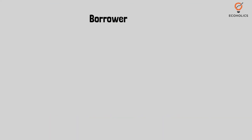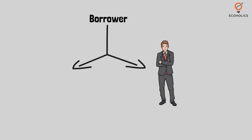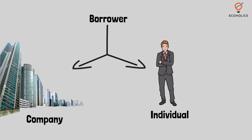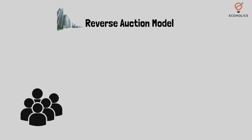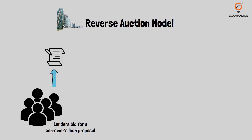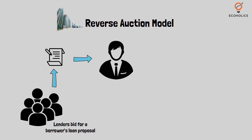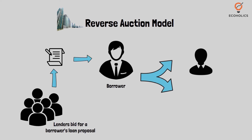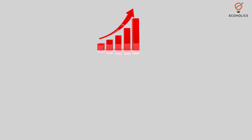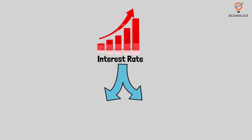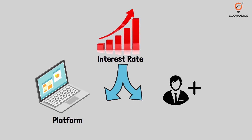The borrower could be an individual or a legal person, such as a company. The companies generally follow a reverse auction model in which the lenders bid for a borrower's loan proposal and the borrower has the freedom to either accept or reject the same. Further, the interest rate could be determined by the platform or agreed to by the borrower and the lender.